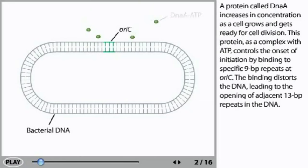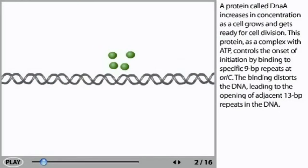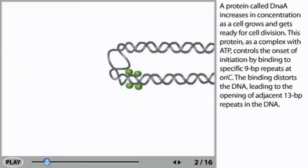A protein called DnaA increases in concentration as a cell grows and gets ready for cell division. This protein, as a complex with ATP, controls the onset of initiation by binding to specific nine base pair repeats at oriC. The binding distorts the DNA, leading to the opening of adjacent 13 base pair repeats in the DNA.